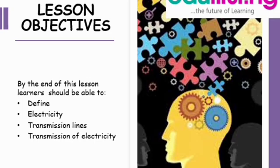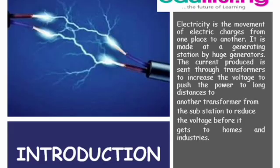Introduction. Electricity is the movement of electric charges from one place to another. It is made at a generating station by huge generators. The current produced is sent through transformers to increase the voltage to push the power to long distances, to another transformer from the substation to reduce the voltage before it gets to homes and industries.